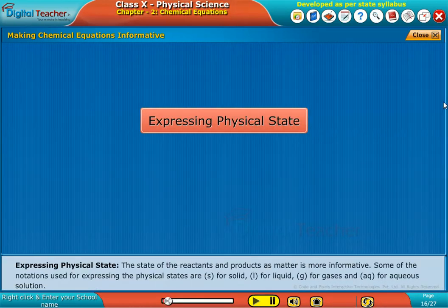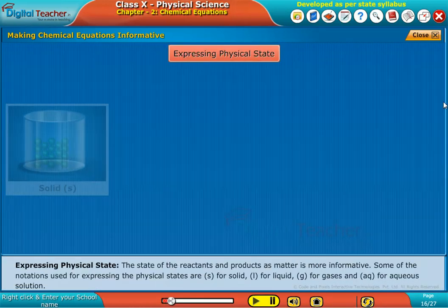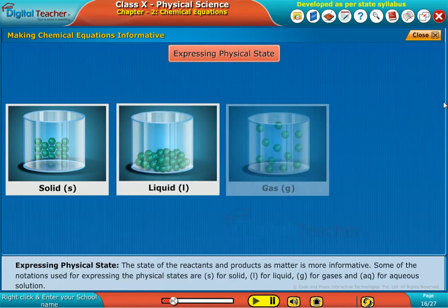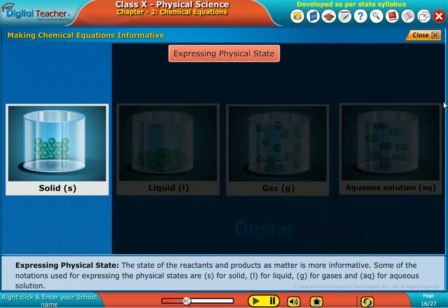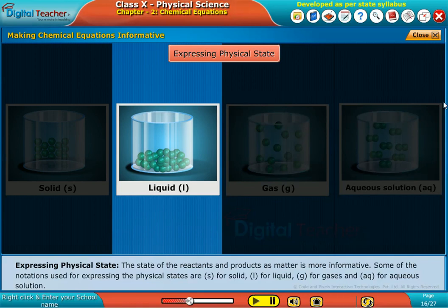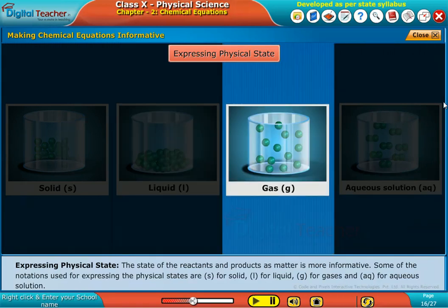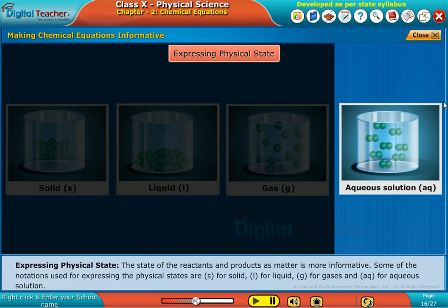Expressing physical state. The state of the reactants and products as matter is more informative. Some of the notations used for expressing the physical states are S for solid, L for liquid, G for gases, and AQ for aqueous solution.